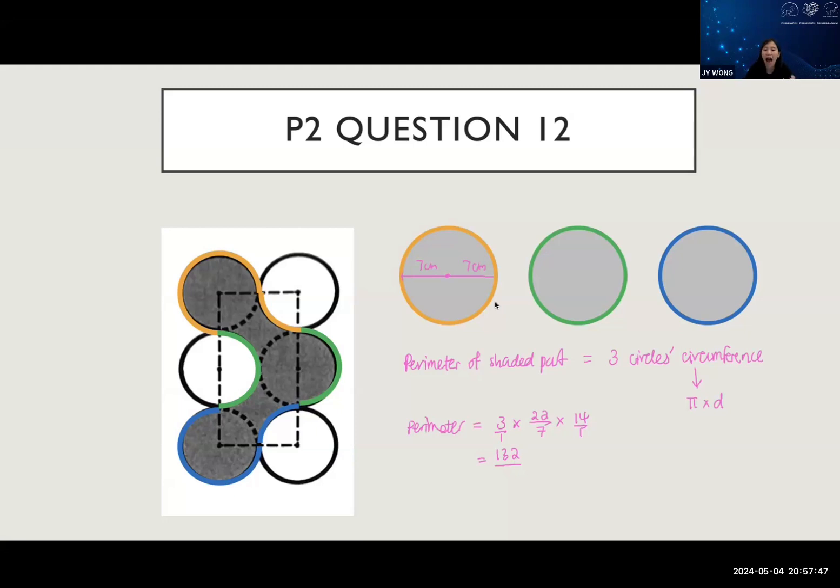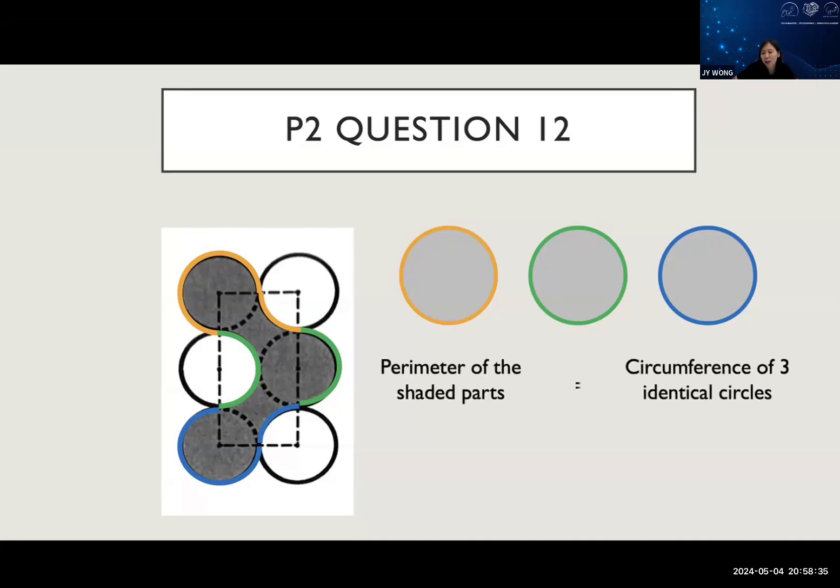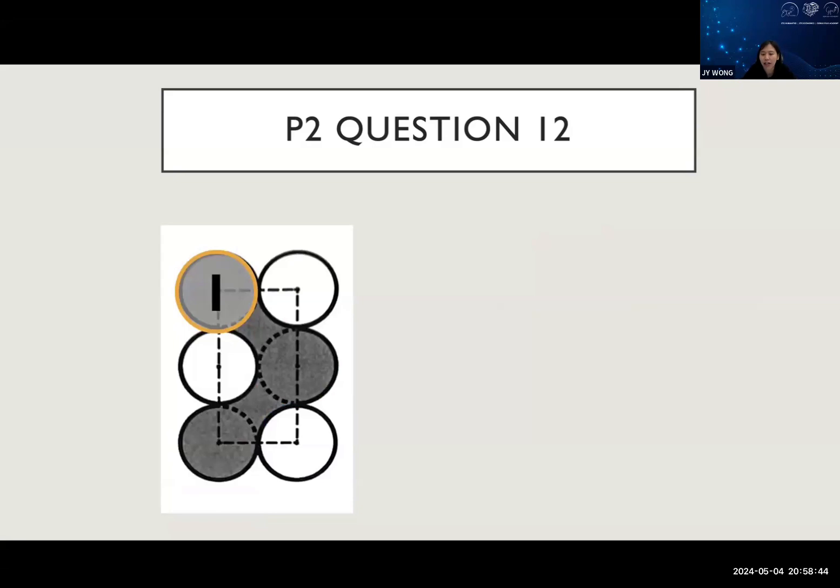The outline of the shaded part is the same as perimeter. For part b, I have many different answers. I start to see correct answers - 546 is the correct answer. The perimeter equals the circumference of three identical circles. Now look at the area carefully - those who didn't get 546, listen carefully. The area consists of these three circles, but there's more to consider.